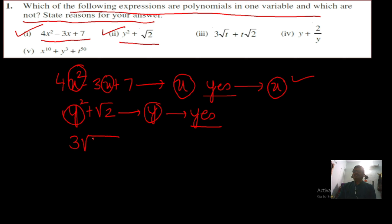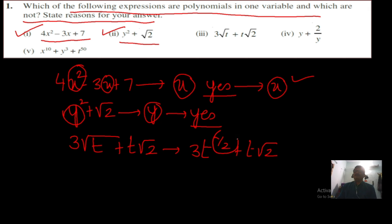The next question is 3√t plus t√2. If you look at this question, the degree is 1/2, which is a fraction. This is not a polynomial because the degree — the power — is a fraction, not a whole number.